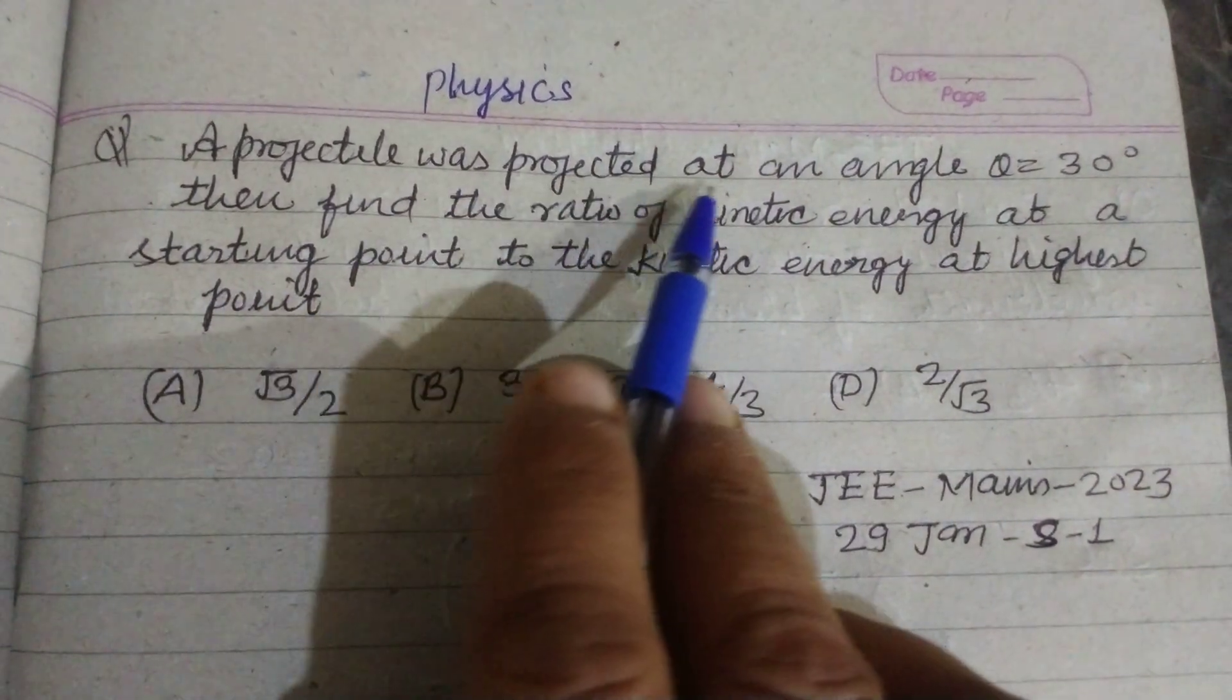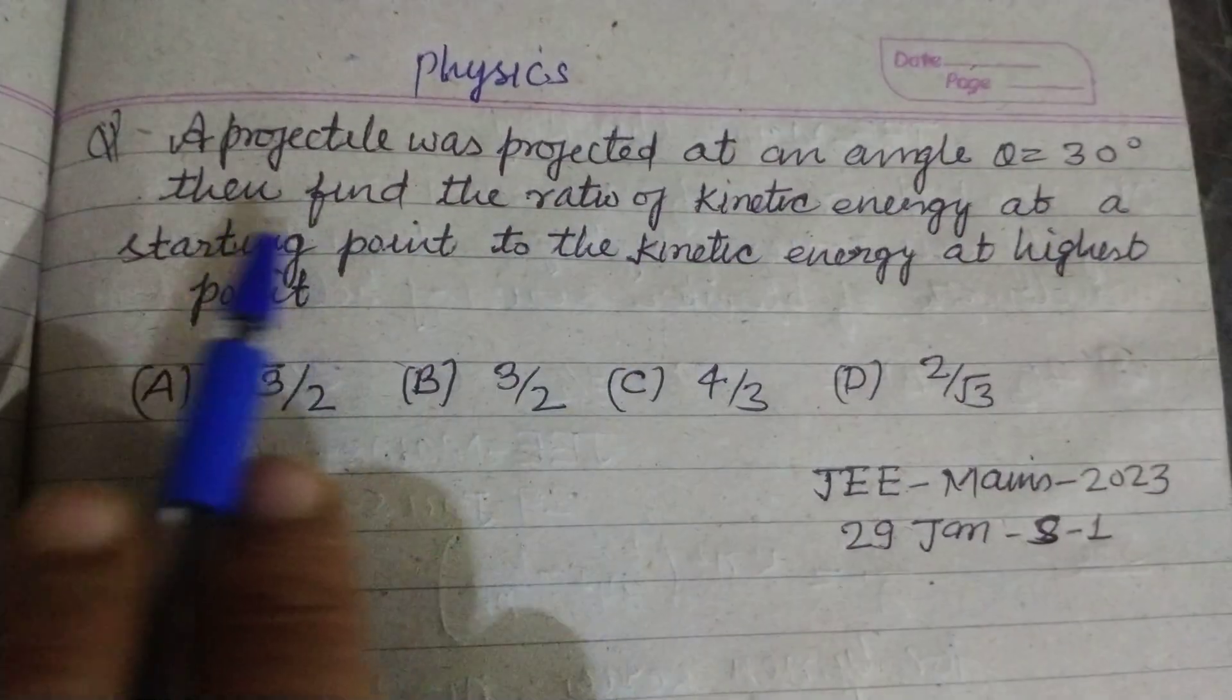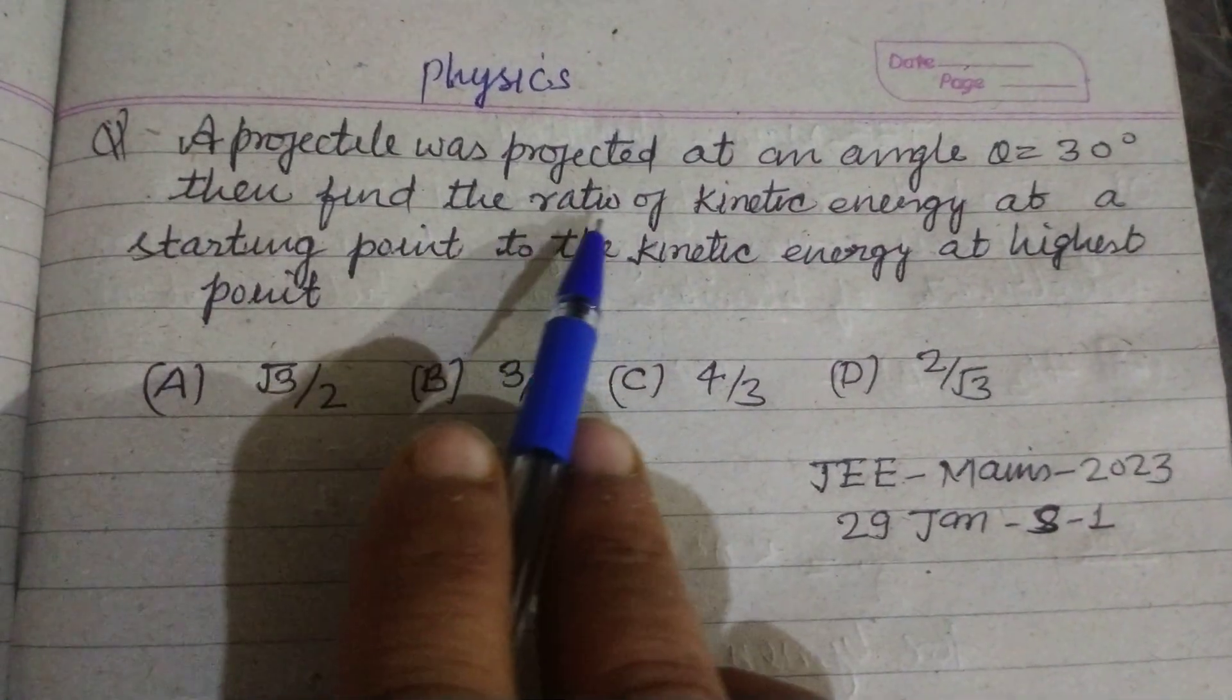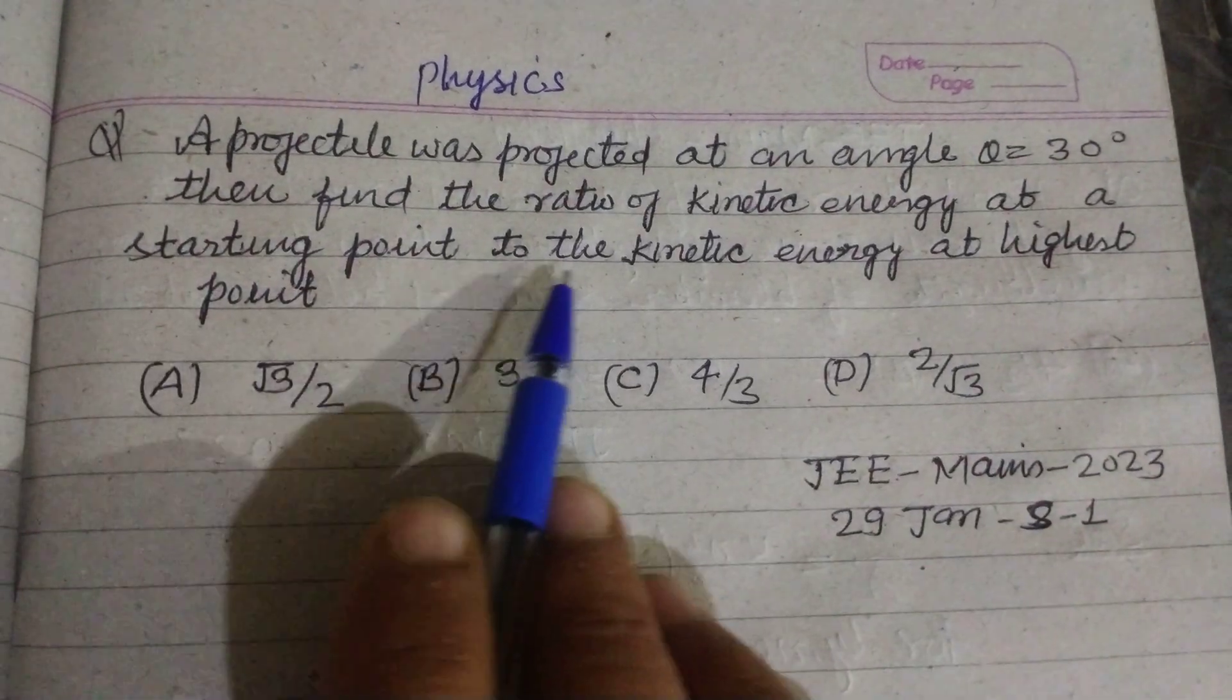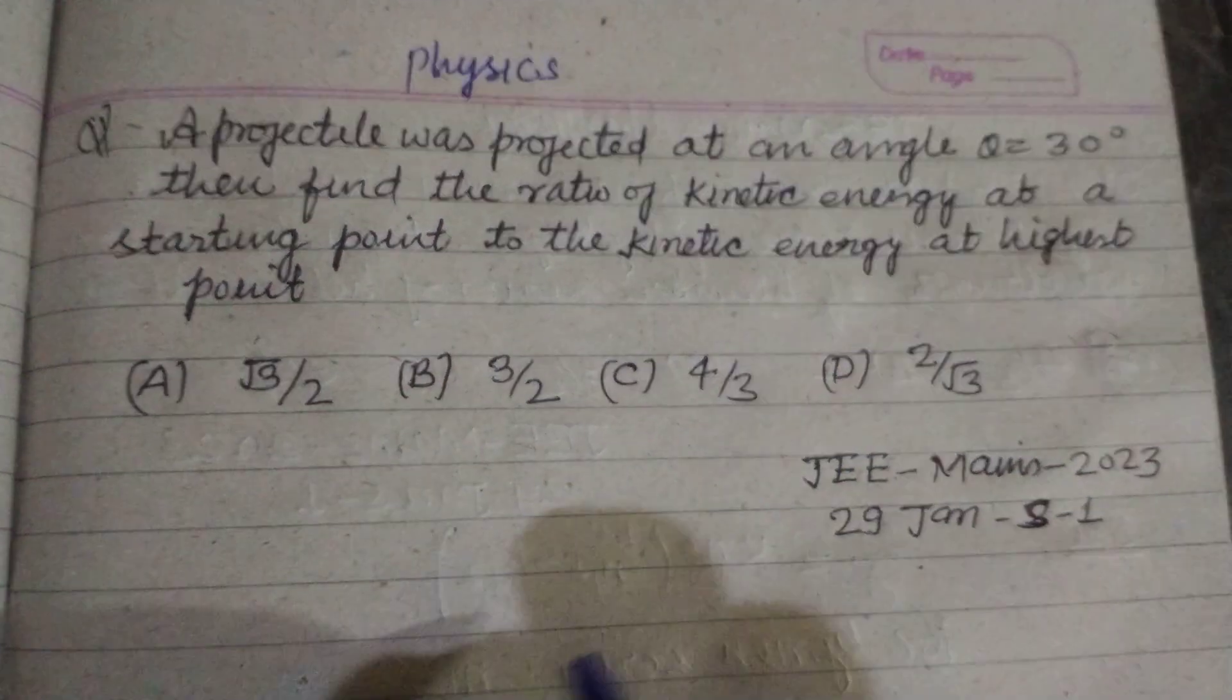A projectile was projected at an angle theta equal to 30 degrees. Then find the ratio of kinetic energy at starting point to the kinetic energy at highest point.